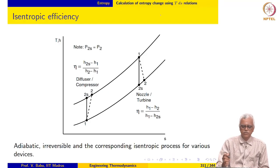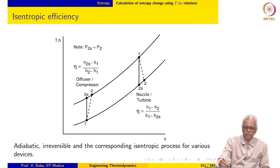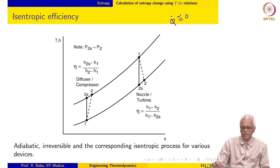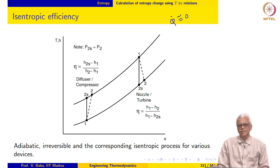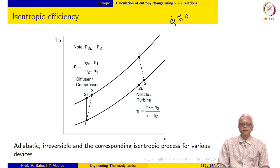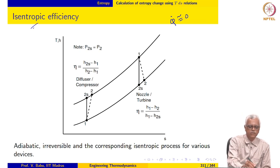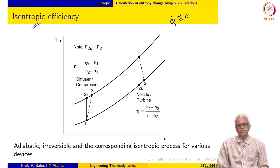For devices which operate adiabatically or close to adiabatic, either q-dot is identically equal to 0 or q-dot is approximately equal to 0. For such devices, we can actually define a performance metric called the isentropic efficiency.